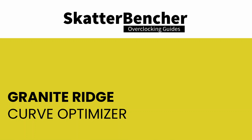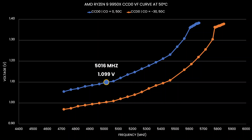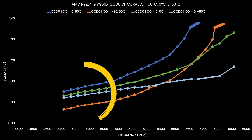Curve Optimizer is one of the most important tools of the Precision Boost Overdrive Toolkit, most commonly used to undervolt the CPU by applying a negative value. If we set Curve Optimizer to negative 30, we shift the entire voltage-frequency curve along the voltage axis, and suddenly we need significantly less voltage for every operating frequency. For example, with CCD0 at 50°C for 5 GHz, we needed about 1.1V by default, but with a minus 30 Curve Optimizer we now only need 1.005V. Curve Optimizer's impact is much more homogenous across the curve, while lowering the temperature is much more impactful at the upper end of the curve.